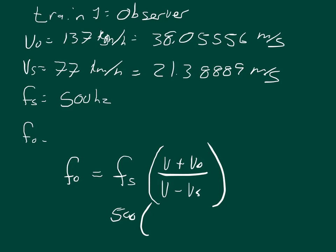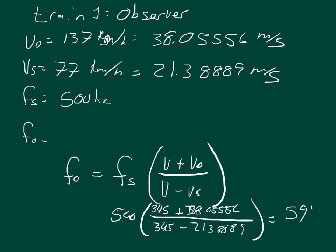So add that to the velocity of the observer, 137 km/h equals 38.05556 meters per second. We can divide that by 345 minus 21.38889. And so that should equal the frequency that the observer hears, roughly 591.85 hertz.